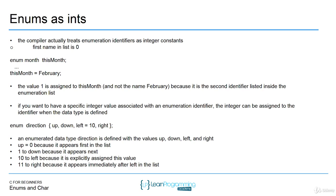This is important because when you do comparisons or print out the values, you need to know that enums are actually represented as integers inside the system. But you can still use names like February, March, January when you assign to your enum or compare values against another value — it still allows you to use those nice names. We'll have a challenge on enums so you can become more familiar. The key points are: how to create an enum type, how to create variables of that type, and how to assign values. It's nice because you can control what's being assigned.